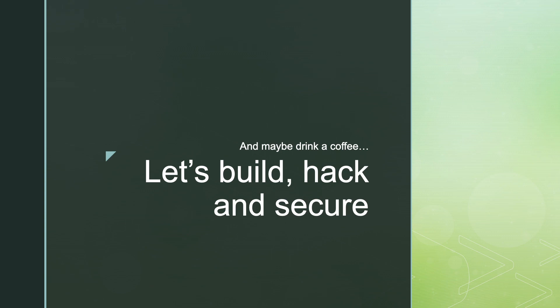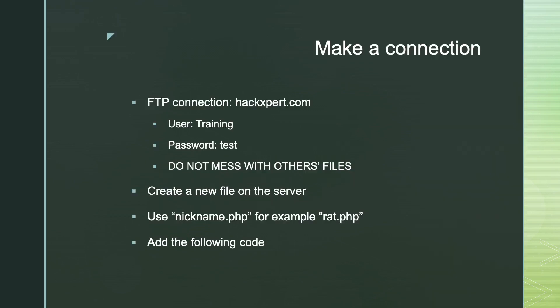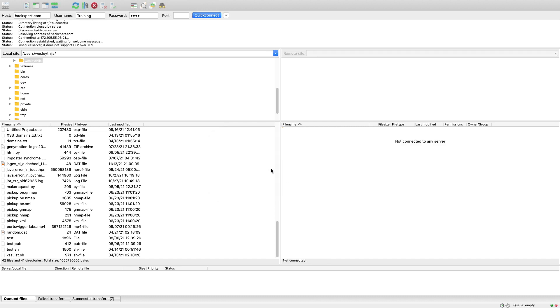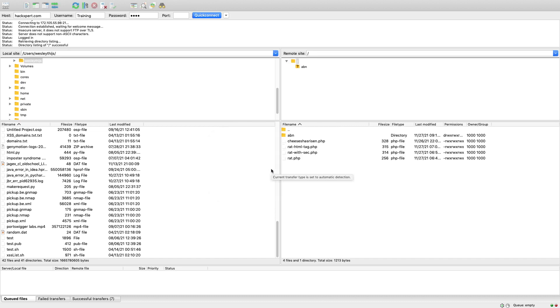Every night I'll be removing files through a cron job, so make sure you save your work locally as well because it might be removed. The FTP connection you want to make is through hexpert.com using the username 'training' and the password 'test'. Go to hexpert.com with username 'training' and password 'test'.